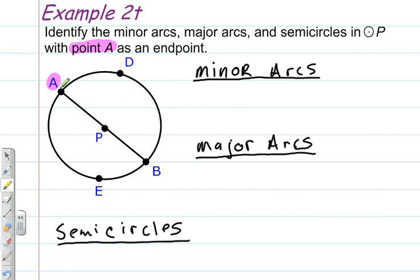So, if we talk about the idea of minor arcs, we're going to have AD, arc AD as a minor arc, because it's less than a semi-circle or smaller than a semi-circle. So, AD is going to be a minor arc, and also then AE will be a minor arc.